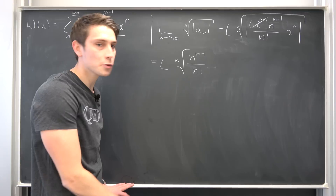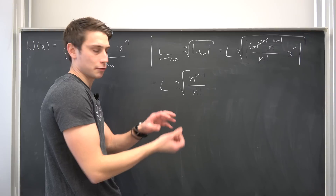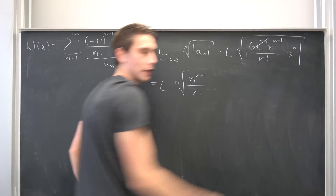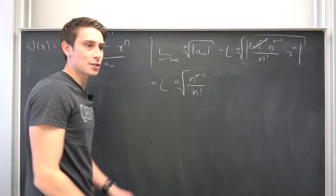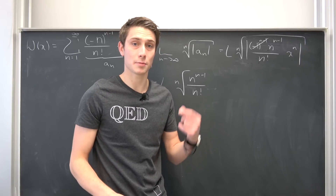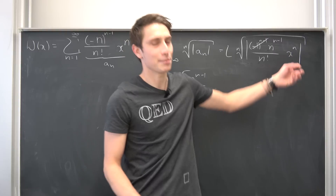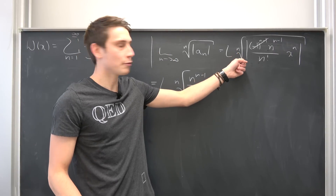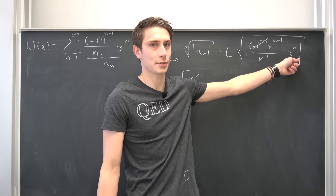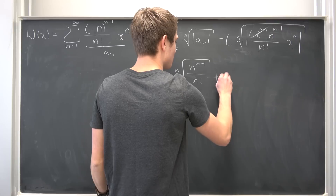We got rid of those absolute values. The absolute value is multiplicative, meaning we can drag it out: that's the absolute value of this chunk times the absolute value of x to the nth power. The absolute value of x to the nth power is the same as the absolute value of x to the nth power, and if we take the nth root of that, it's just going to be the absolute value of x.